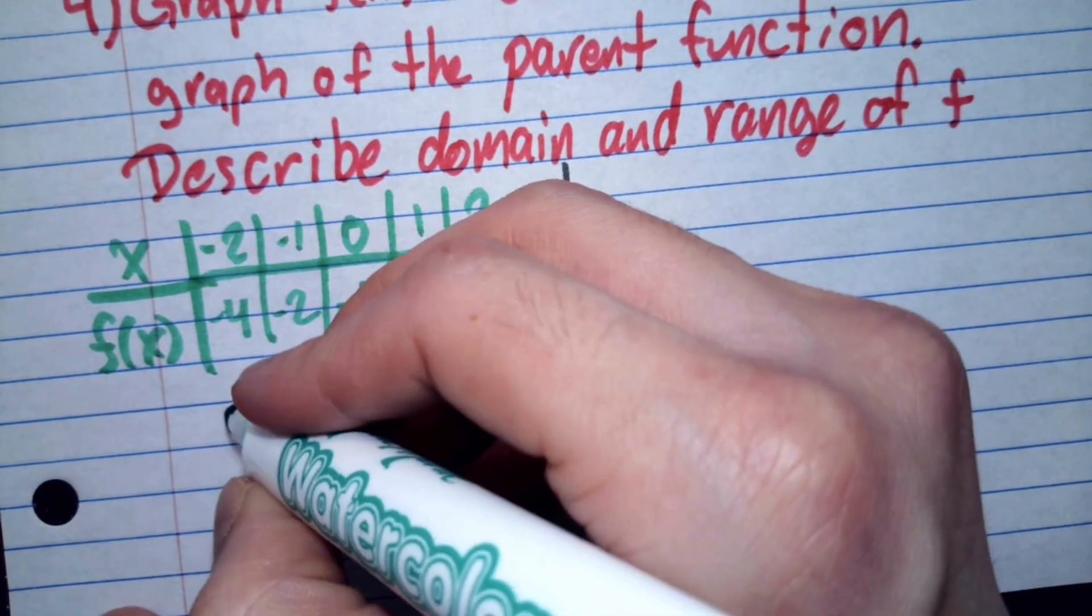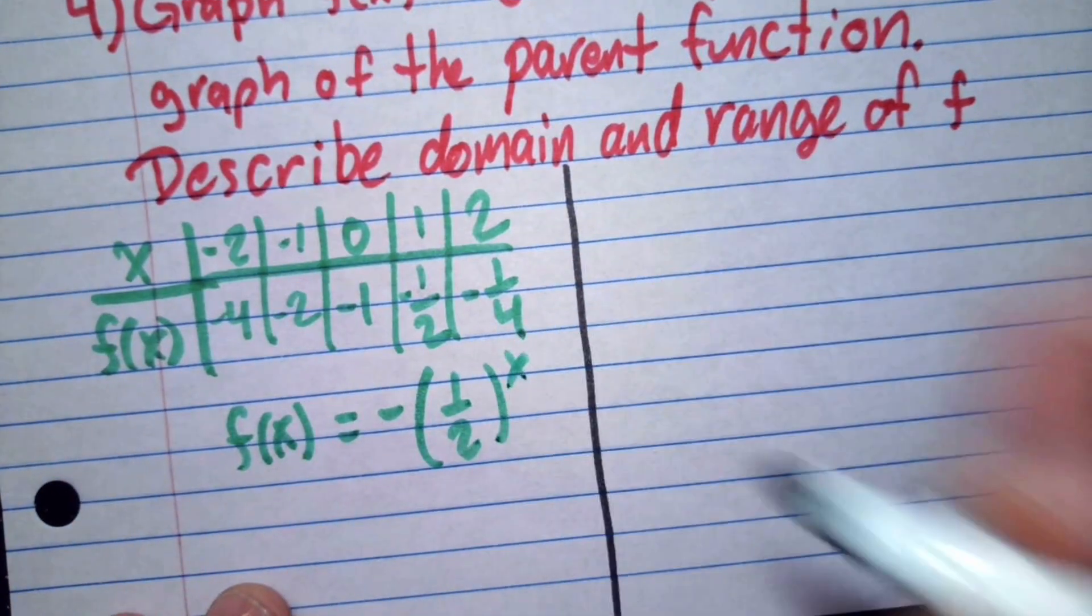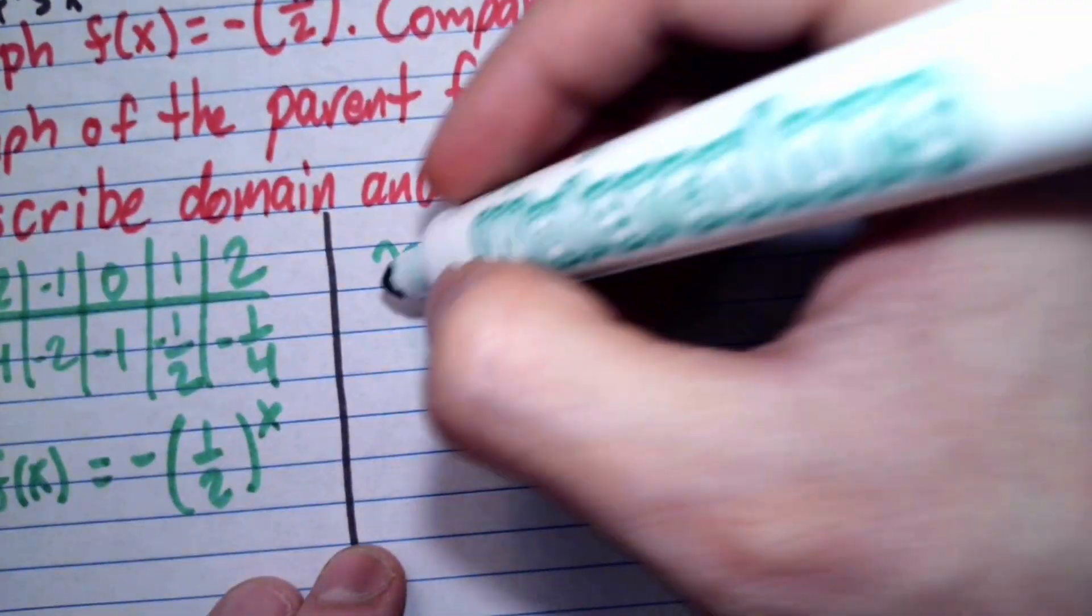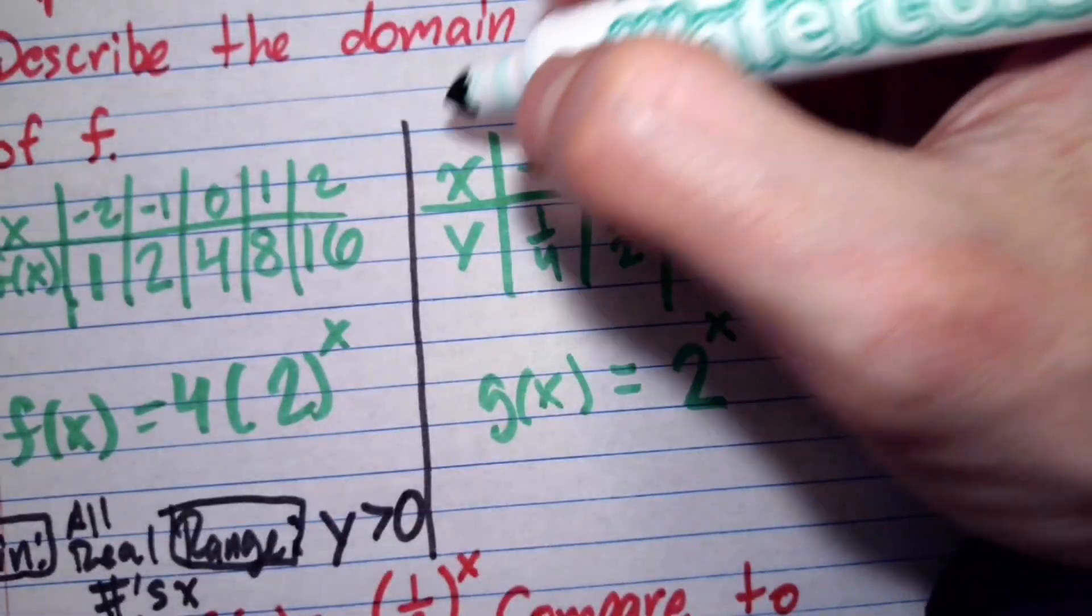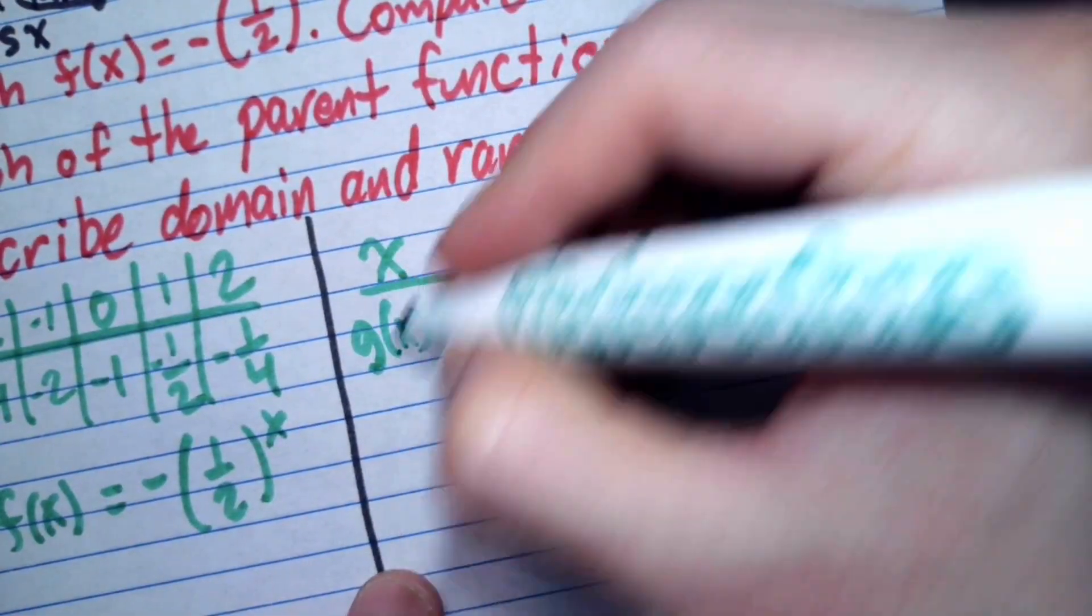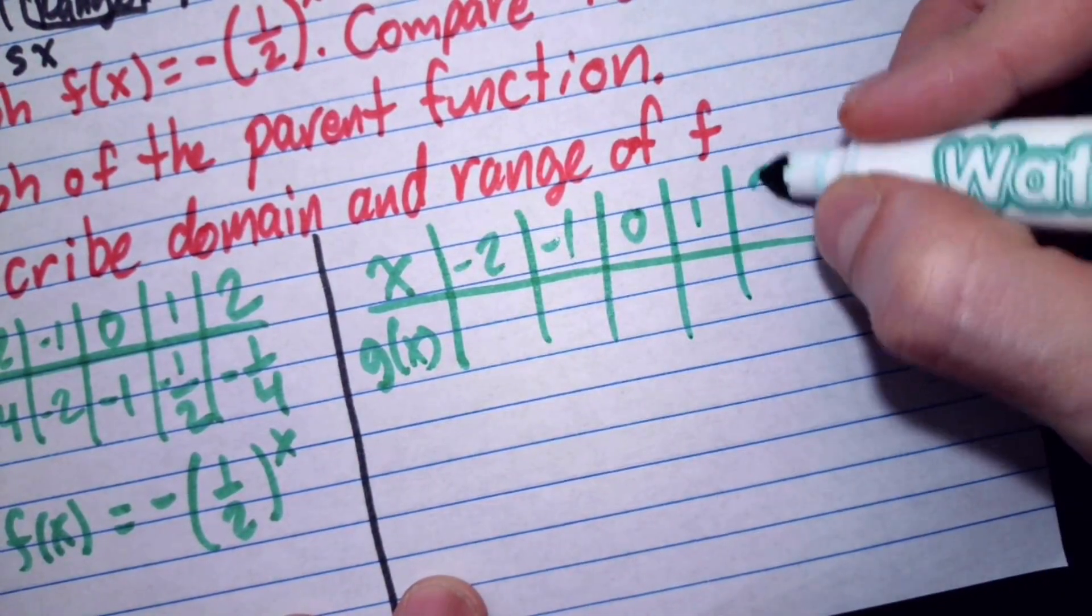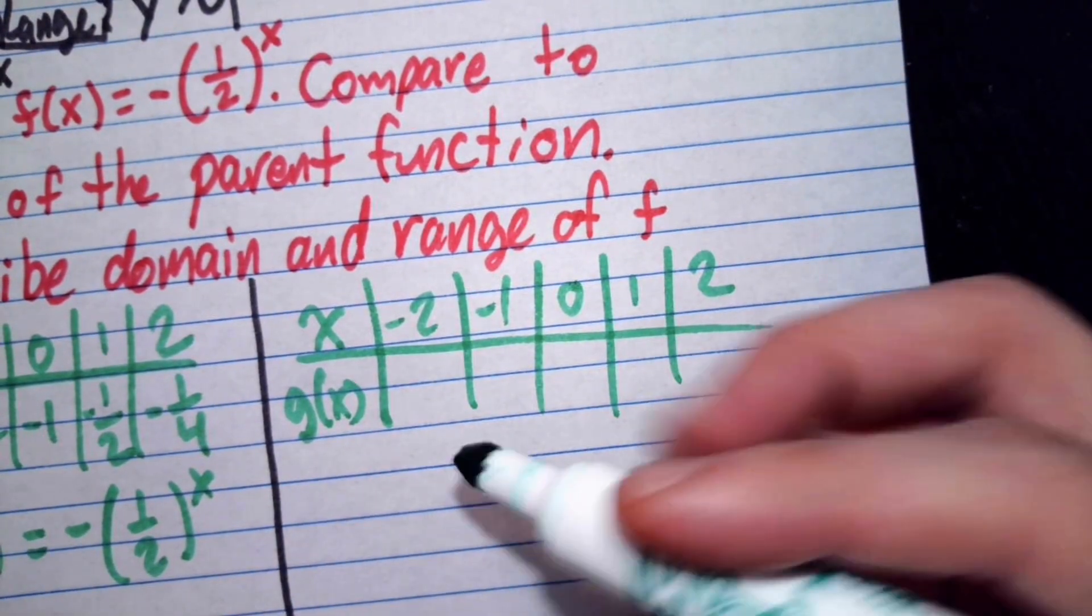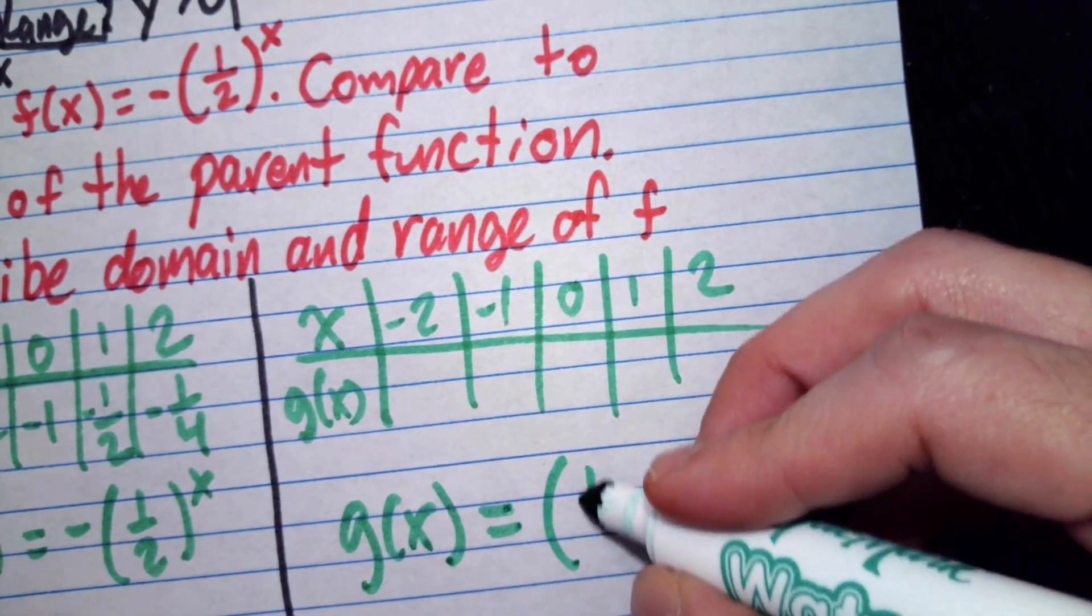So this right here is for the function minus 1 half to the x power. Now we have to look at our parent function, which is going to be almost the exact same thing. We'll call it g of x now. I realized I didn't call this one g of x. Let me just change this to be consistent. But yes, this one needs to be called g of x. And so once again, same x values. Now for g of x, we're going to plug in our values, and we have to remember that the parent function in this case would be almost the same thing, but now we're not going to include that negative.